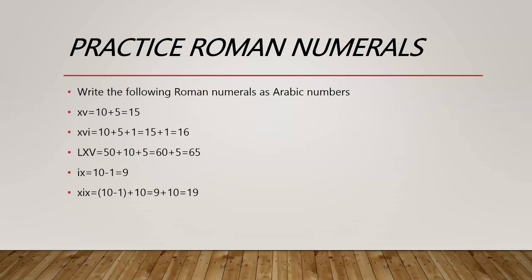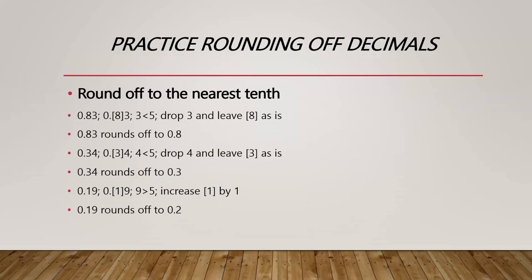For rounding decimals: 0.83 — we put the bracket on the 8, since that's the first number after the decimal point, then we have 3. We notice 3 is less than 5, so we drop the 3 and leave the bracket number as it is. 0.83 rounds off to 0.8.